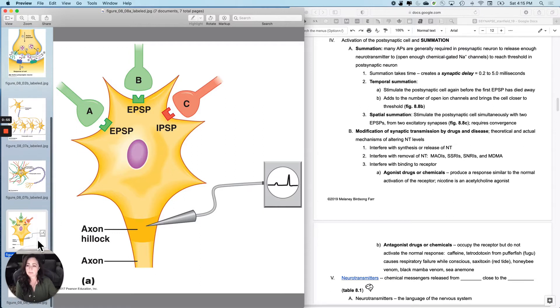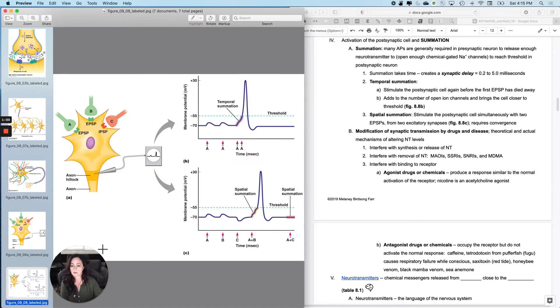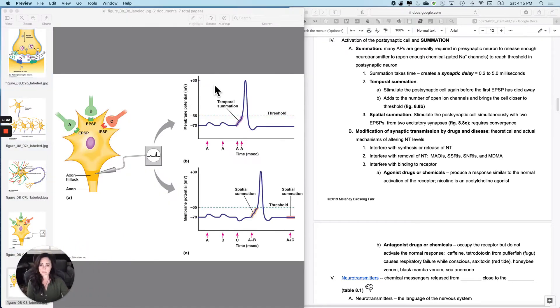So let's talk about a couple of different ways in which you could get to an action potential theoretically. The first picture, we have to look at these carefully. This one is only using a single synapse A, an excitatory synapse. And then this one is going to be using A, B, and C. How do I get that postsynaptic cell to an action potential?